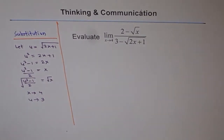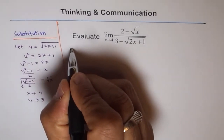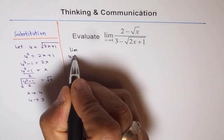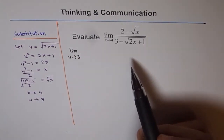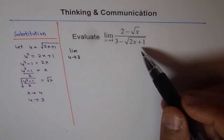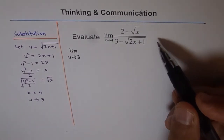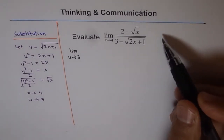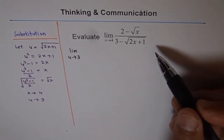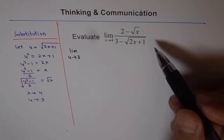We have done our substitution and now let us do the algebra. Let me write this in terms of u, so we have the limit as u approaches 3. An alternate method here is rationalization — we might have to rationalize both numerator and denominator: numerator by (2 plus square root x) and denominator by (3 plus square root of 2x plus 1). That is not very simple either, so we adopted this substitution method.